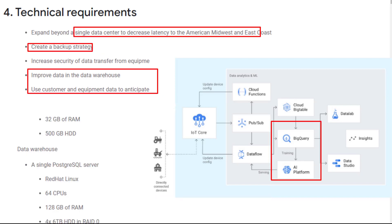Next, use multi-region BigQuery to replace the single PostgreSQL data warehouse, which not only decreases latency but also improves availability and durability. The recovery and failover process is managed by BigQuery. Integrate BigQuery with Datalab or the AI Platform as needed to train ML models to anticipate customer needs. Please check my video on the last-minute cheat sheet of Google Cloud Machine Learning covering BigQuery ML, AutoML, and Google pre-trained models.